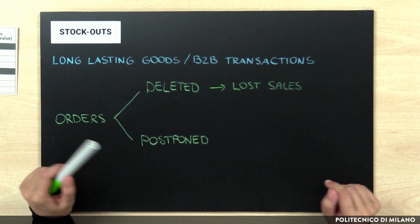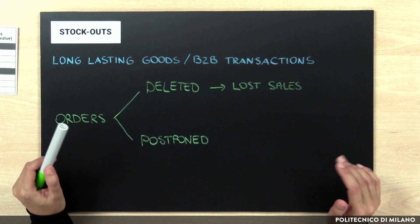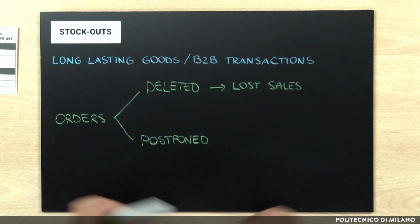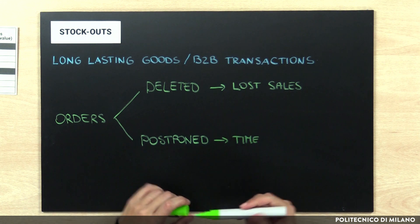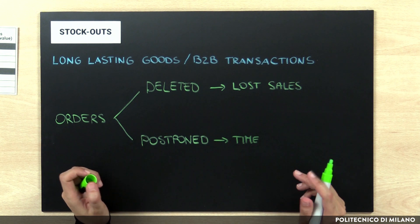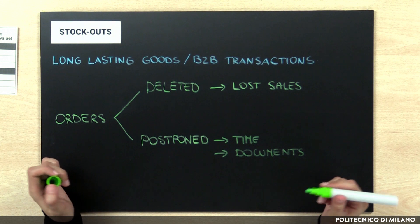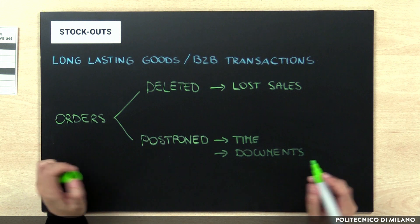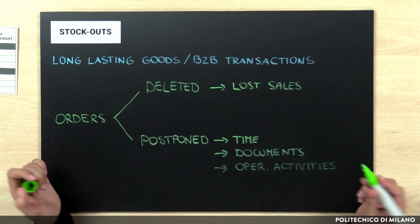If the order is postponed, the stock-out cost can be related to additional costs from different activities done by the supplier. For example, they can be related to the time the supplier spent to manage the customer — for example, to find an agreement. It can also be related to additional documents to be prepared and additional operational activities to be performed if the missing items are sent in a separate shipping, and also to discounts requested by the customers.